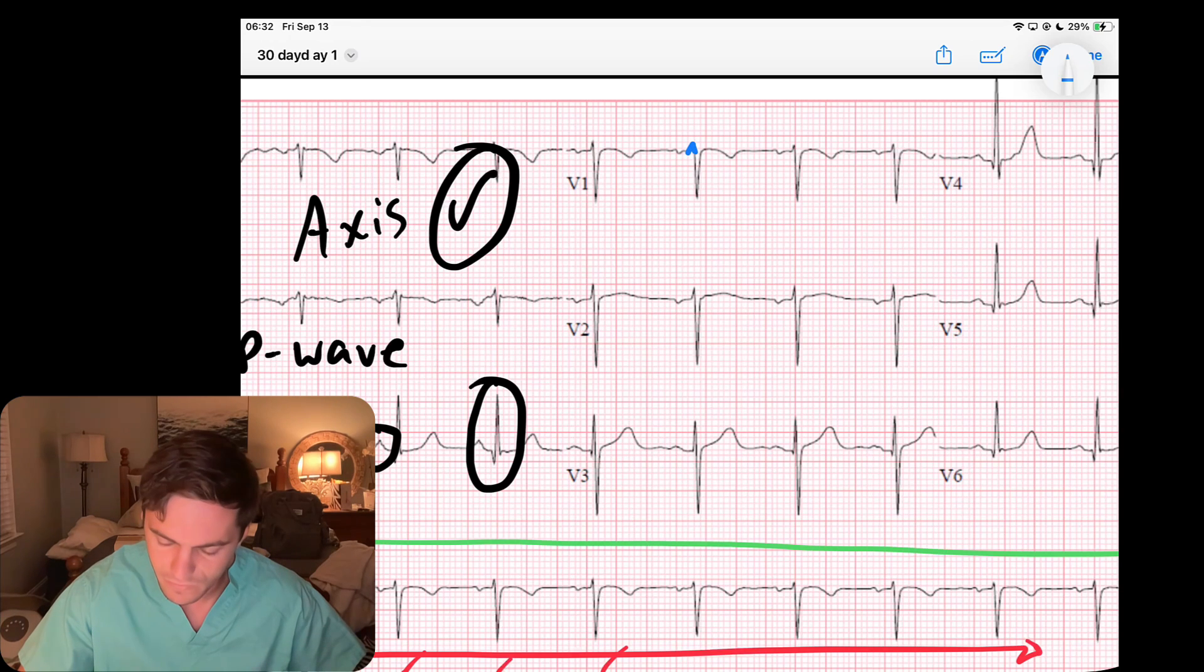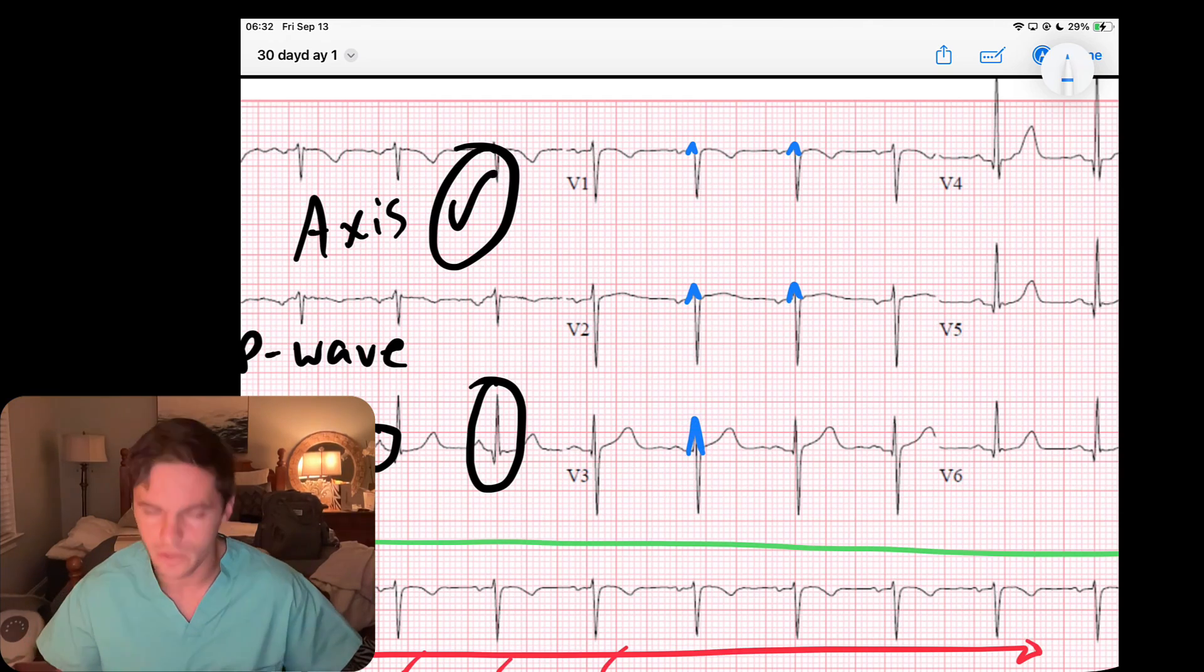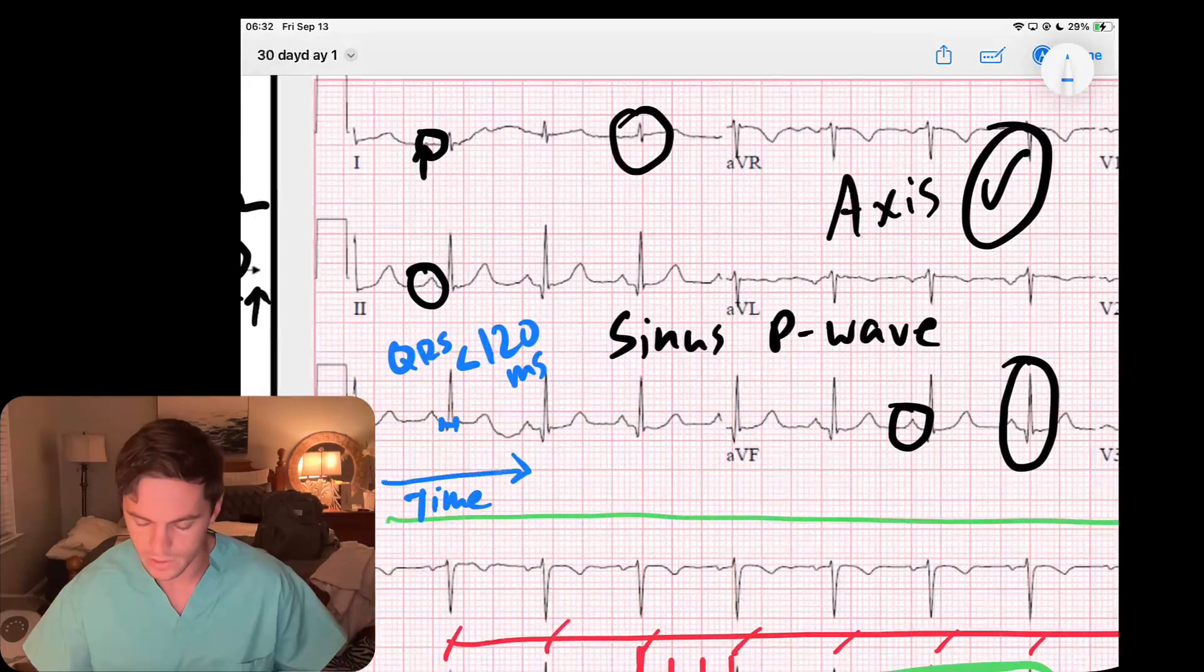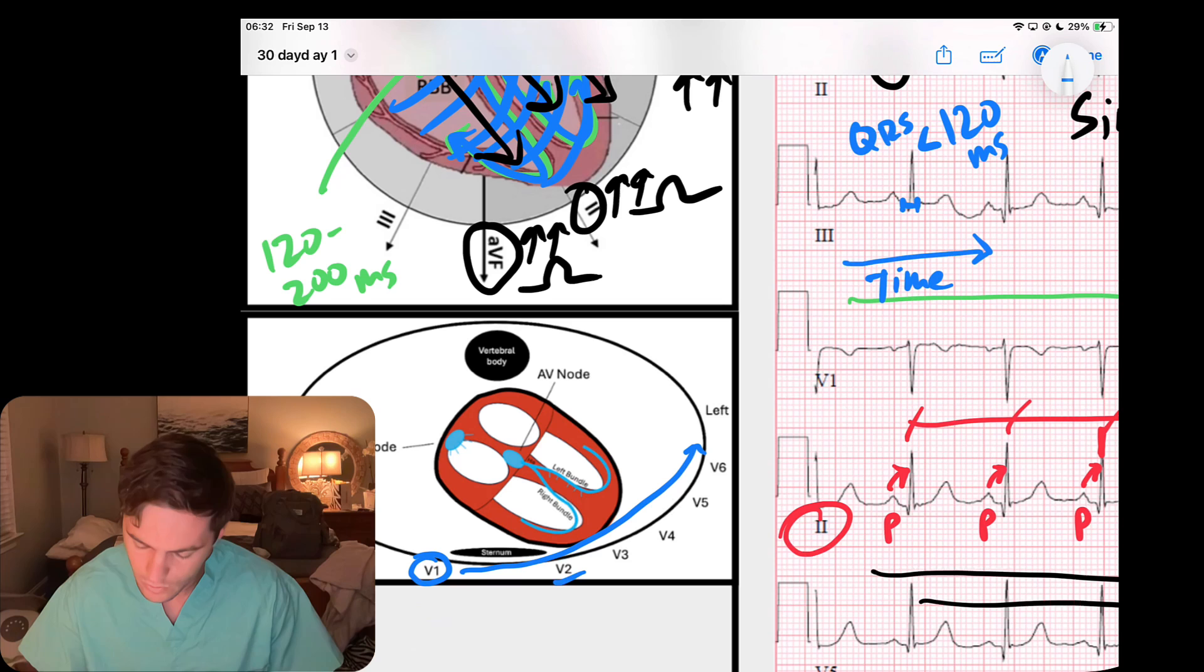What you'll notice is that we have these small septal R waves in V1, and those septal R waves grow in V2, and then V3 they start to get bigger as we're getting closer. As we're getting towards V2, V3, V4, we're getting closer to where that wave of depolarization is headed.